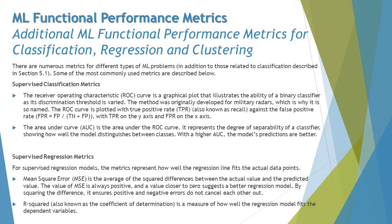The Area Under the Curve (AUC) — the inside part of the ROC curve — represents the degree of separability of a classifier, showing how well the model distinguishes between classes. With a higher AUC, the model's predictions are better. On the right-hand side of the slide you have a quick image to get a glimpse of what this really looks like.